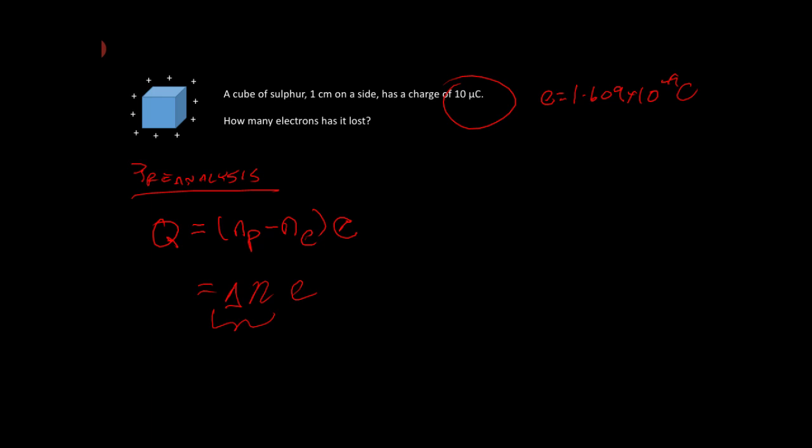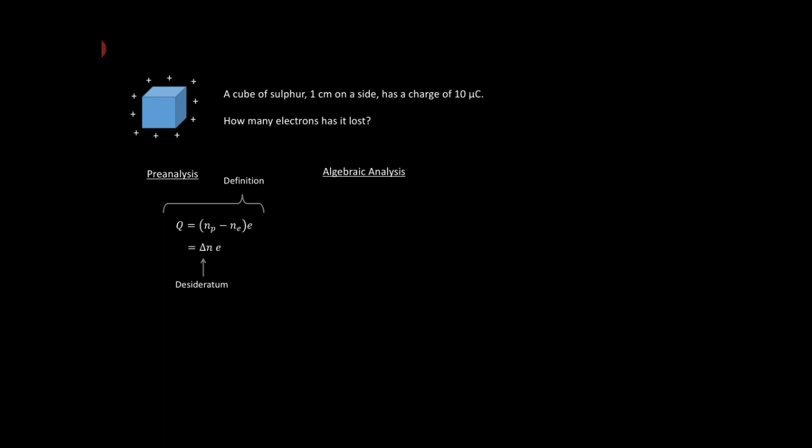So how would we do that? Well, we've done the pre-analysis here. The next thing we need to do is an algebraic analysis. We need to basically plug in the numbers. So we're saying q is equal to delta n times e. Q we're saying is 10 times 10 to the minus 6 coulombs.